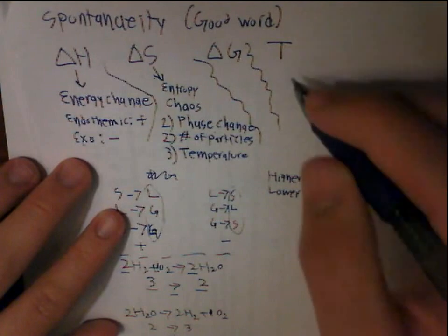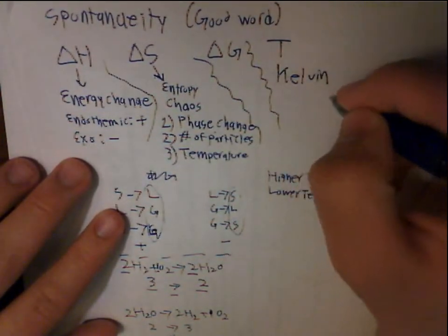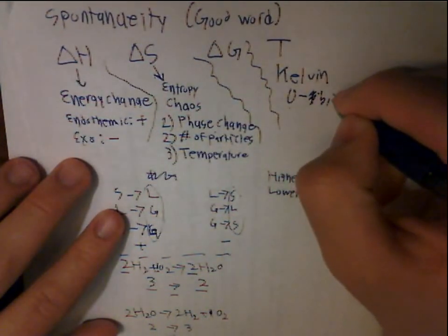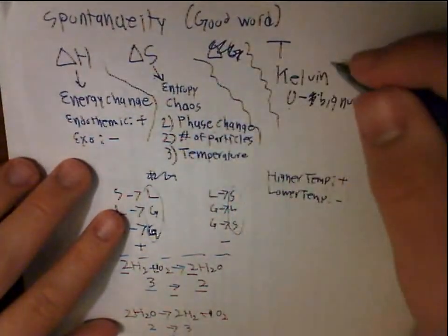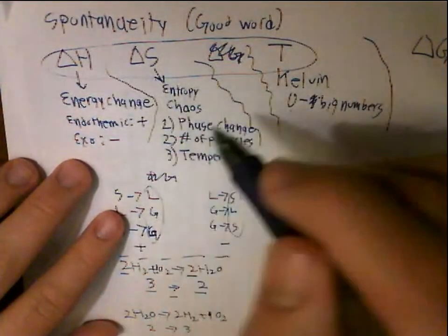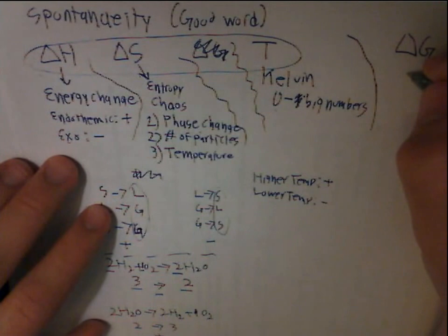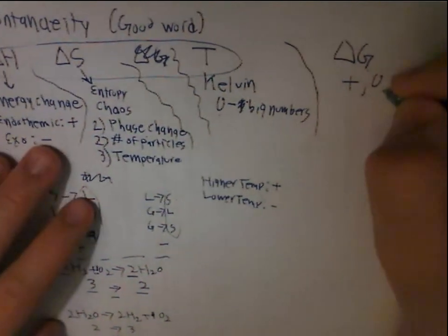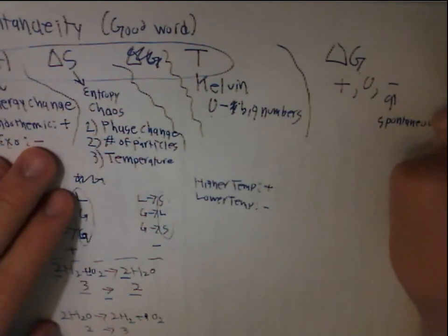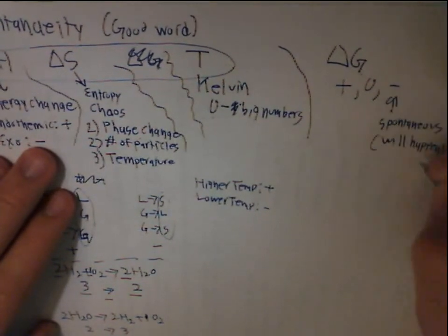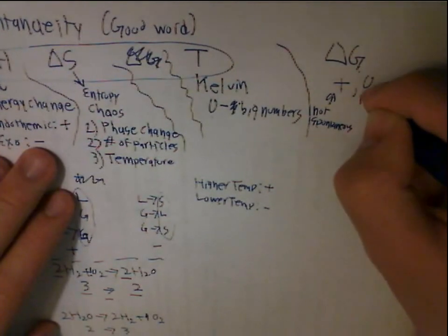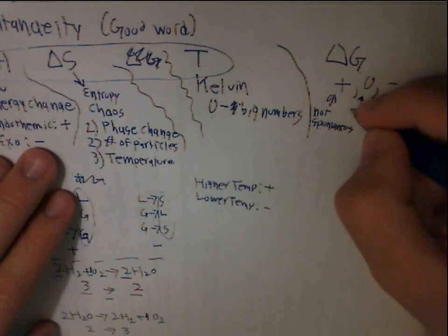Temperature is always measured in Kelvin — the scale that starts at zero for absolute zero and goes up from there. And finally, you have delta G. Delta G is a number you get from the other three, and all you care about is whether it's positive, zero, or negative. If it's negative, the reaction is spontaneous and will happen. If it's positive, it's not spontaneous. If it's zero, it can be spontaneous, but most likely it just means equilibrium.